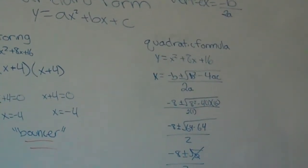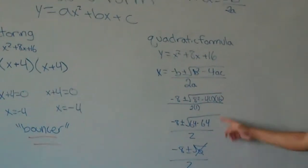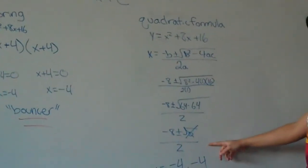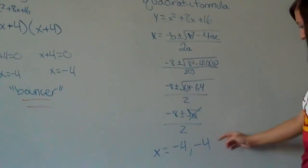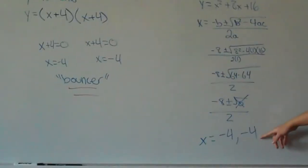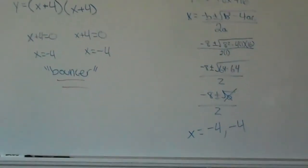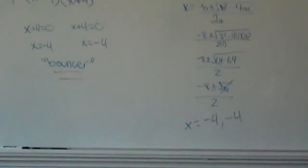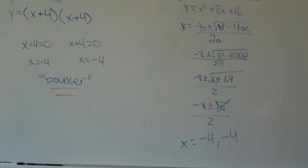And there's our work right there, working down, and we end up getting, again, negative 4 and negative 4 by going through the steps and solving quadratic formula the correct way.